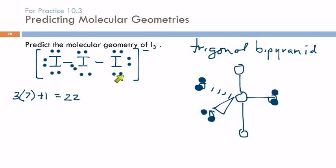One, two, three. So linear. Yeah, just looking at what's left is going to be linear. So the electron geometry is trigonal bipyramidal, but the molecular geometry is linear.